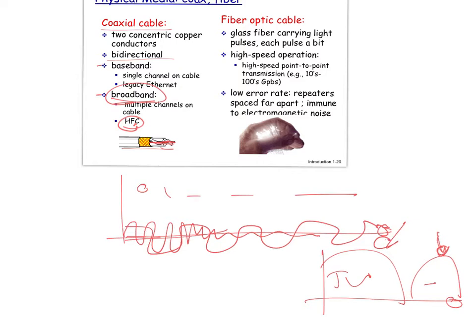Broadband carries the signal over a high-frequency carrier. This is how cable TV internet works — the cable modem shifts the internet traffic in the frequency domain to separate it from the TV signal. Baseband means sending an analog or digital signal as-is; our voice is an analog baseband signal. Radio FM takes that analog voice signal and shifts it in the frequency domain to create different radio channels — that becomes broadband.